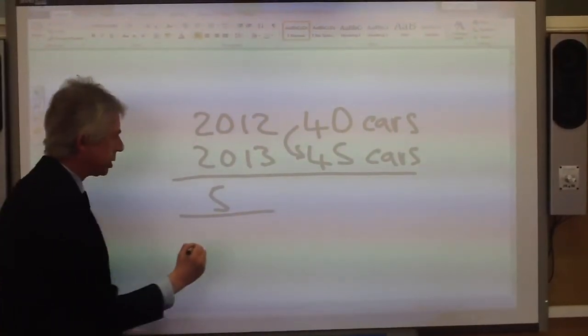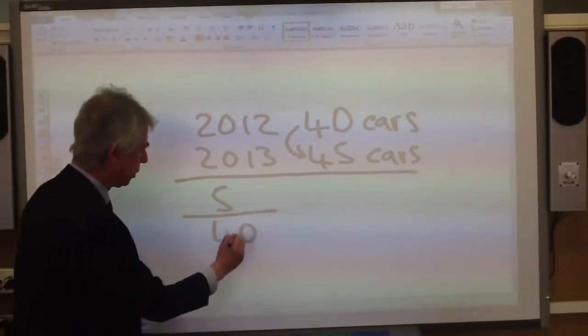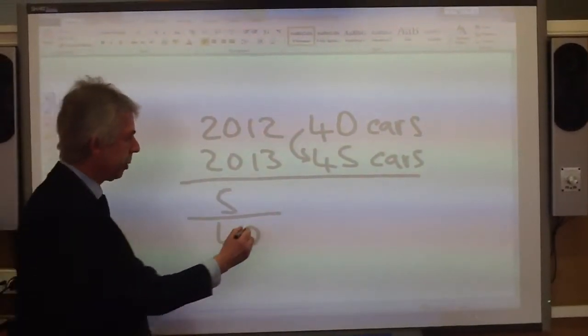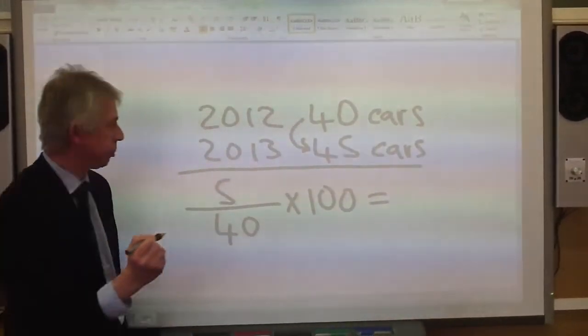And we do the change divided by the original. The original was 40. We originally sold 40 cars. And then we multiply it by 100 to turn that into a percentage.